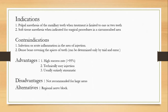Indications include when pulpal anesthesia of the maxillary teeth is needed, limited to one or two teeth, when a nerve block is not effective, or if the patient has an acute phase of infection. Soft tissue anesthesia is indicated for surgical procedures in a circumscribed area, like biopsy. Contraindications include infection or acute inflammation, or if there is bone covering the apex of the tooth. Advantages include a very high success rate and it is a technically easy, atraumatic injection requiring no landmark identification.